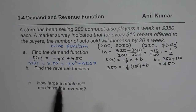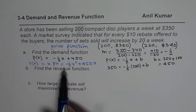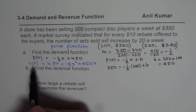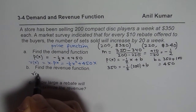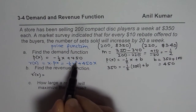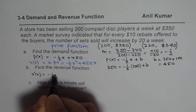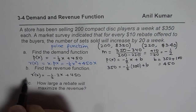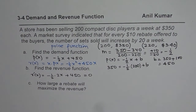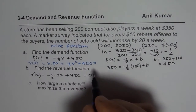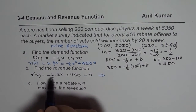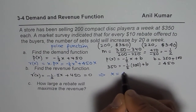Now, how large a rebate will maximize the revenue? To maximize revenue, we find its derivative and equate it to zero. The derivative of r(x) = -x²/2 + 450x is r'(x) = -x + 450. Setting this equal to zero: -x + 450 = 0, so x = 450. The revenue is maximized when 450 compact discs are sold.